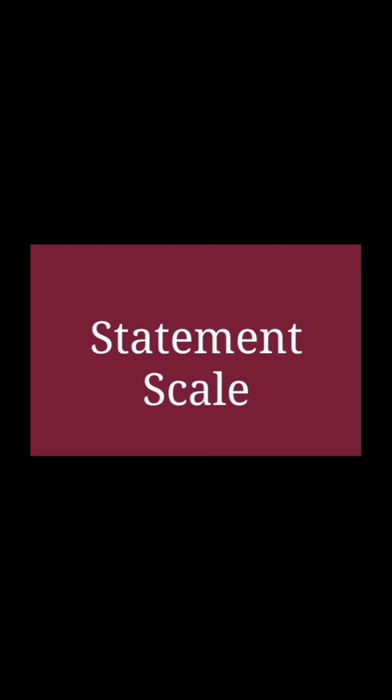Statement scale: If the actual distance between any two places on the ground is one kilometer, we can say that one kilometer on the ground is represented by one centimeter on the map — or a ratio of one centimeter to one kilometer.